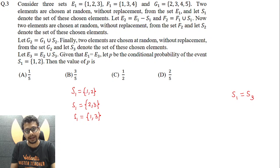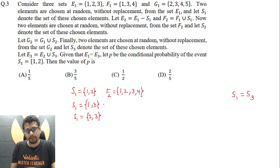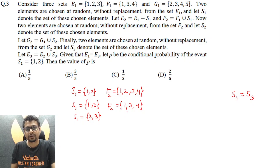Now, if S1 is {1,2}, F2 — my bad — would become a set having four elements {1,2,3,4}. When S1 is {1,3}, F2 would become {1,3,4}, since F2 is F1 union S1. And when S1 is {2,3}, F2 would become {1,2,3,4}.